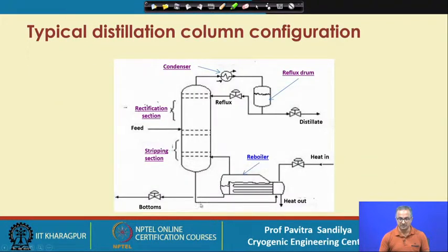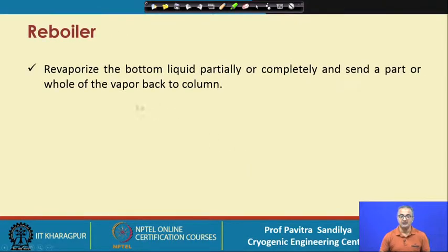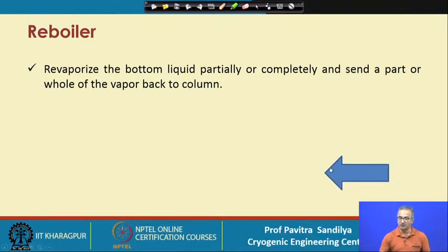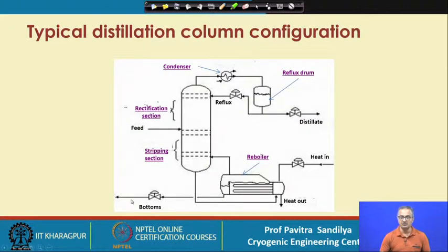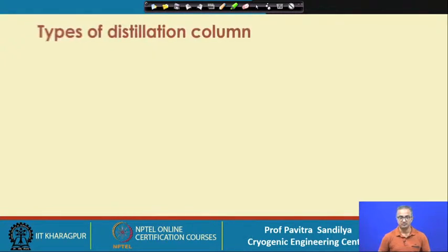At the bottom, the bottom liquid comes down and goes to a reboiler. The reboiler is operated by adding external heat, just as the condenser is operated by removing heat via some cooling medium. The reboiler re-vaporizes the bottom liquid either partially or completely and sends part of the vapor back to the column, and from the reboiler we get the bottom product. This is the typical configuration of a distillation column — variations may be found for different types of separations and applications.